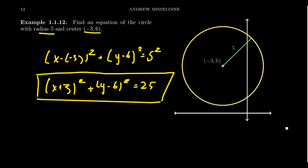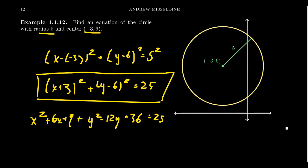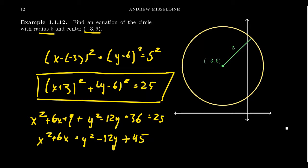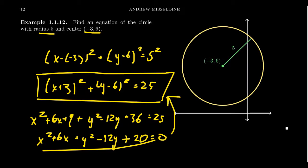Standard form is preferred because it's the simplest form and we can readily see the radius and center. Someone might expand everything out to get x squared plus six x plus nine plus y squared minus twelve y plus 36 equals 25, which simplifies to x squared plus six x plus y squared minus twelve y plus 20 equals zero. When it's all multiplied out like that, it's not obvious what the center or radius is. To convert back to standard form, you'd need to complete the square for both the x and y coordinates.